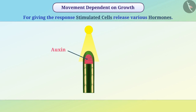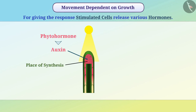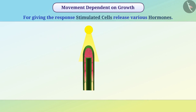A hormone is an organic compound produced in small concentration used to transfer information to various parts of the organism. The hormone produced by a plant is called a phytohormone. The place of synthesis and the place of action of a hormone are often different, so the hormone reaches the functional area through diffusion. Auxin causes an increase in the length of cells.